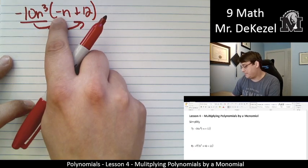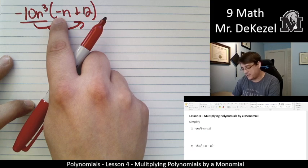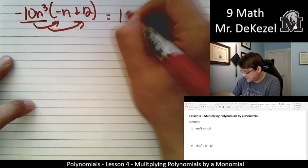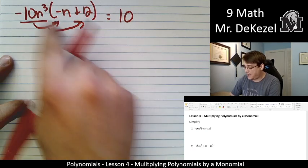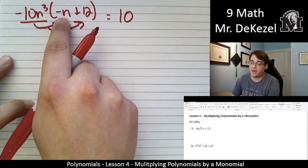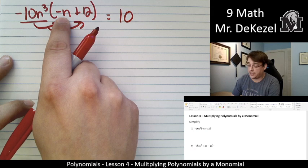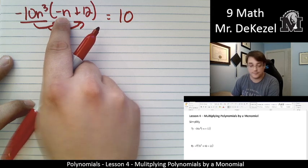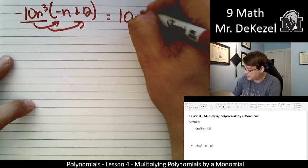Minus 10 times a minus here. This is a minus 1, so that actually makes it 10. And then n³ times n to the power of 1. You add their exponents when you're multiplying variables. So we add them together. We have n to the power of 4.